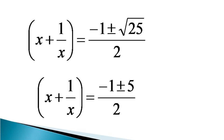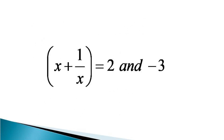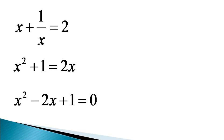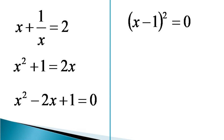From here we get two values for x plus 1/x, which are 2 and minus 3. First, we consider x plus 1/x equals 2 and multiply both sides by x to get the equivalent equation x squared plus 1 equals 2x. Bringing all terms to the left hand side gives x squared minus 2x plus 1 equals 0, which is nothing but (x minus 1) squared equals 0, giving the value of x equal to 1.